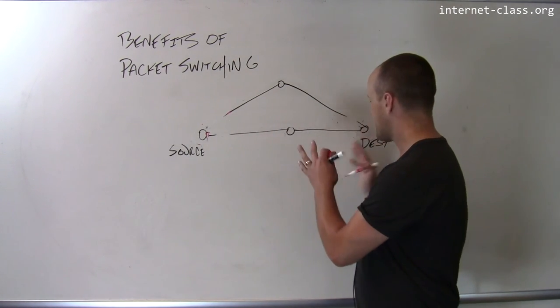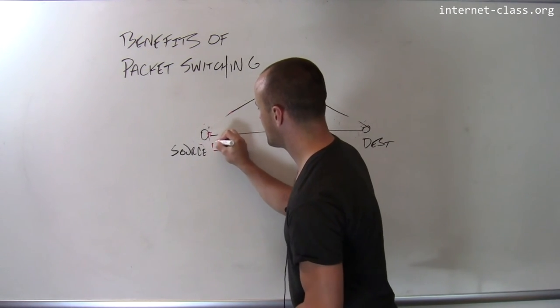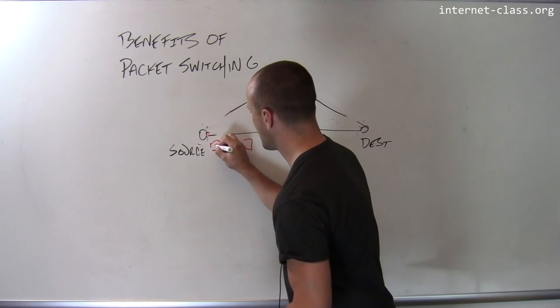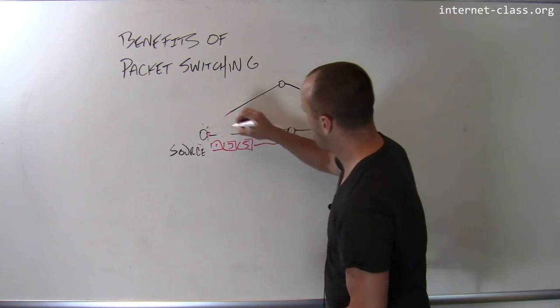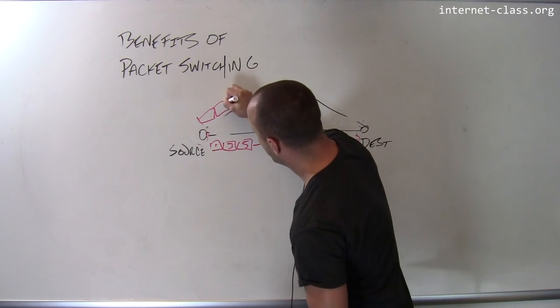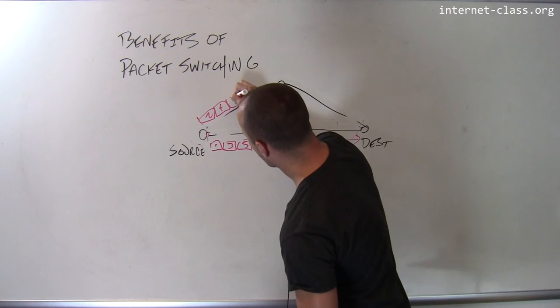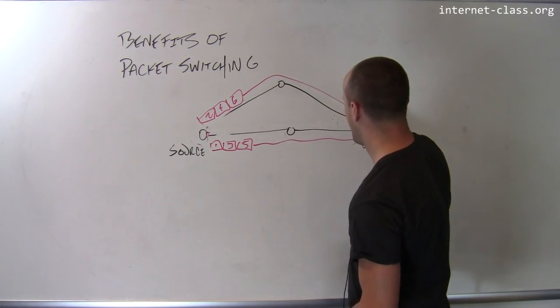So if the source suddenly has a lot of information to send to the destination, some of its packets, let's say this is one, three, and five, can go down this path, while other ones - two, four, and six - follow this other path. And so when needed, there's a lot of network resources at my disposal, but when I'm not using the network, I'm not taking up any space.